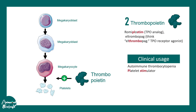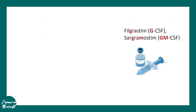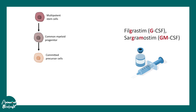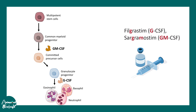Now let's talk about G-CSF and GM-CSF, which are granulocyte colony stimulating factors. There are two particular drug names: filgrastim and sargramostim. These two cytokines belong to the hematopoietin protein family and they help in the formation of several cell types. From multipotent stem cells there are common myeloid progenitors, then committed precursor cells. GM-CSF helps progress from common myeloid progenitor to committed precursor cells.